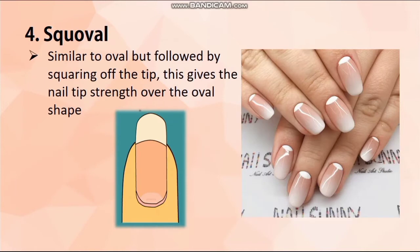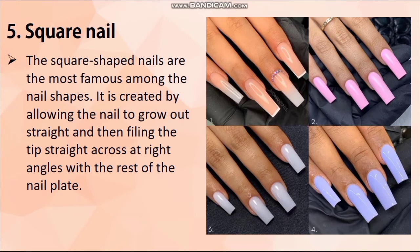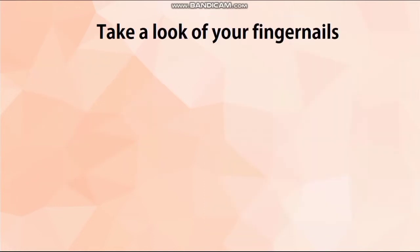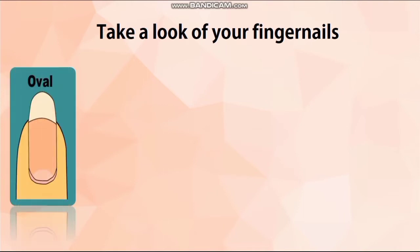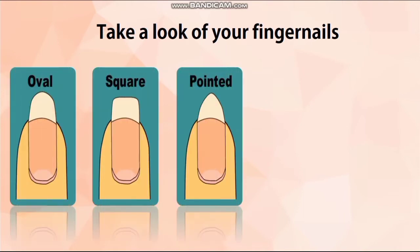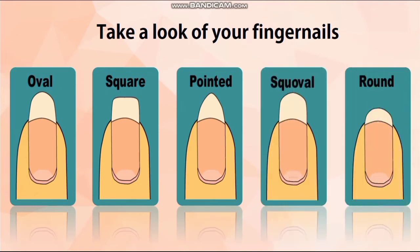Number 4: Squoval. Similar to oval but followed by squaring off the tip. This gives the nail tip strength over the oval shape. Number 5: Square nail. The square nail shape is the most famous among the nail shapes. It is created by allowing the nail to grow out straight and then filing the tip straight across at right angles with the rest of the nail plate. So, take a look at your fingernails — is it oval, square, pointed, squoval, or round nail?